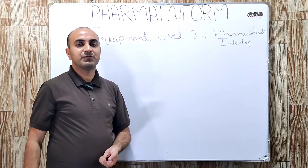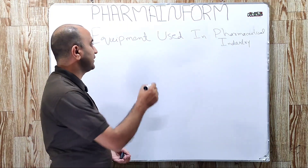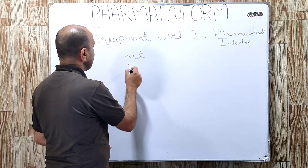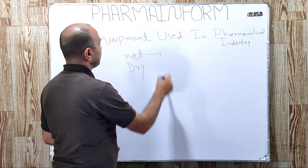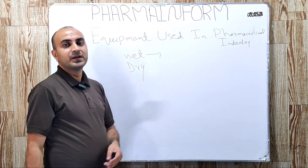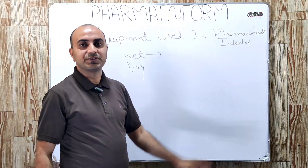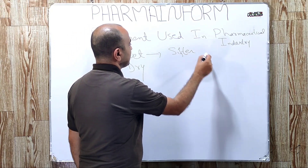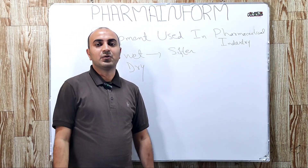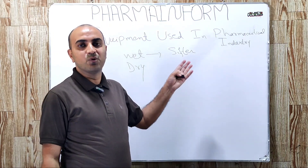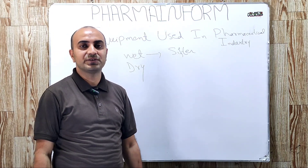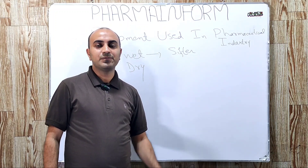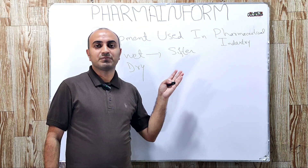For tablet manufacturing, the first step is granulation, and there are two types of granulation: wet granulation and dry granulation. For wet granulation, the first step is sieving. For sieving, we use shifters — many types of shifters are available, known as vibro shifters. One of the most widely used shifters is the Russell shifter, which is used for sieving in the wet granulation process.